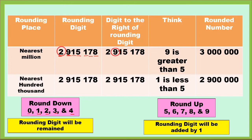Sa example natin, ang nasa right side ng 2 ay 9, which is a round up number, so ang gagawin natin sa 2 ay magiging plus 1 — ang sagot natin ay 3. Then lahat ng digits na nasa right side ng 2 ay magiging zeros. So our answer is 3 million.